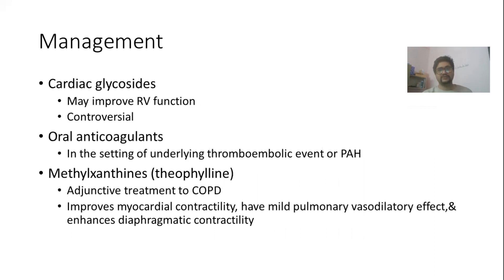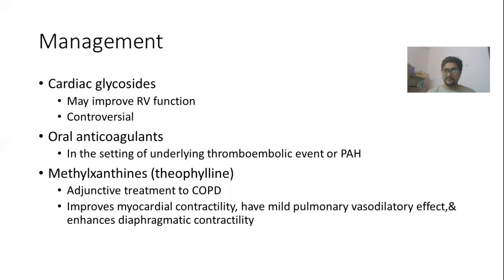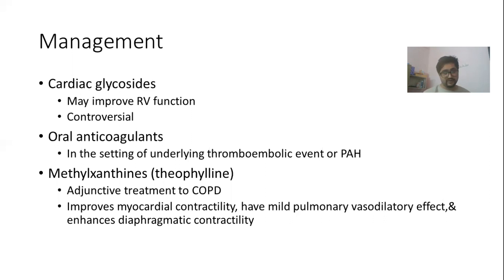Cardiac glycosides may improve RV function but can also cause hypoxia, so their use in cor pulmonale is controversial. In cases of underlying thromboembolic disease or pulmonary arterial hypertension, oral anticoagulants like warfarin can be used. Theophylline or methylxanthines can be useful in cor pulmonale secondary to COPD, as they improve myocardial contractility, have a pulmonary vasodilator effect, enhance diaphragmatic contractility, and improve nighttime oxygenation. Although they have a narrow therapeutic index, they can be used in selected patients.